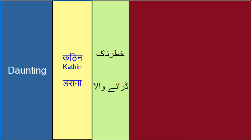D-A-U-N-T-I-N-G ka meaning hota hai: kathin, khaternaak. Daraane waali cheez ko hum daunting kehte hain. Koi cheez humein intimidate kar rahi ho, hamare oopar haavi aa rahi ho, toh use bhi daunting kaha jaata hai.